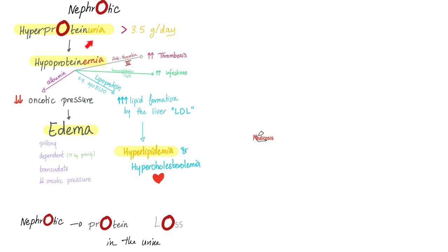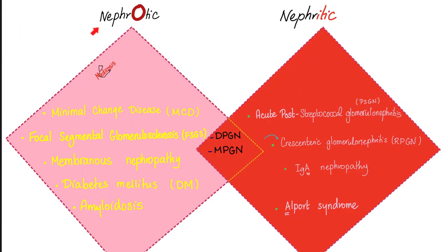You're losing all kinds of protein in the urine, including antithrombin 3 — that's why you clot. Including immunoglobulins — that's why you get infections. Including lipoproteins — that's why you get hyperlipidemia. Including albumin — that's why you get edema.